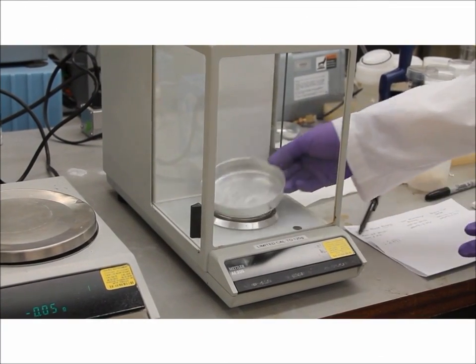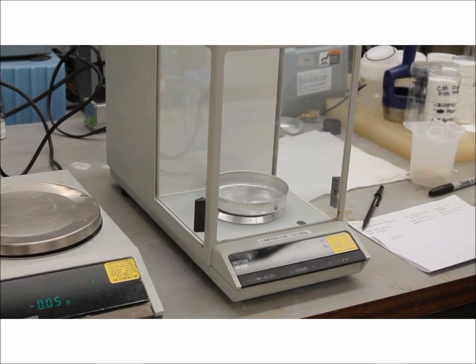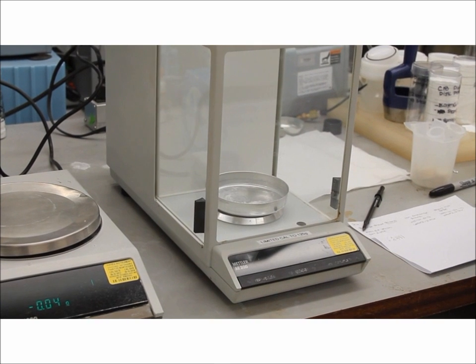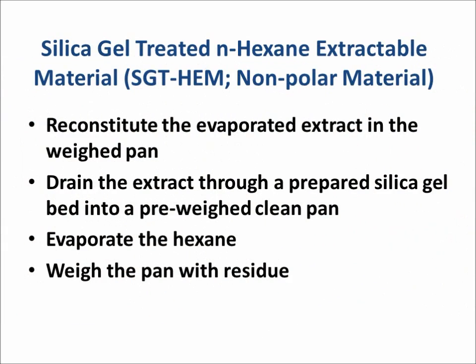Now you want to weigh your pan and subtract the initial empty pan value from the full pan value to obtain your gravimetric hexane extractable result. You have completed the measurement of N-hexane extractable material. If you also need to determine the amount of silica gel treated N-hexane extractable material or the non-polar portion of the material, you'll follow these steps and we'll show you how.